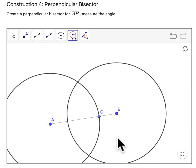There we go. Now, once we drag that over to B, those circles will intersect.